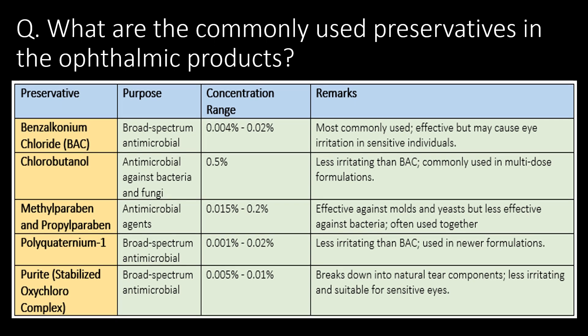What are the commonly used preservatives in ophthalmic products? Here are five commonly used preservatives: first, benzalkonium chloride (BAK); second, chlorobutanol; third, methylparaben and propylparaben; fourth, polyquaternium-1; and fifth, purite.